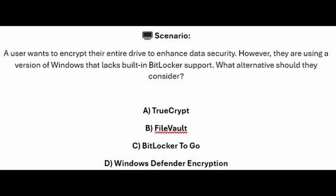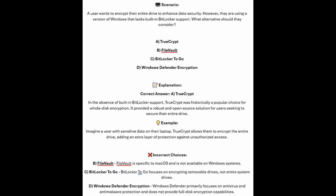Is it A, TrueCrypt? Is it B, FileVault? Is it C, BitLocker2Go? Or is it D, Windows Defender Encryption? The correct answer is A, TrueCrypt.